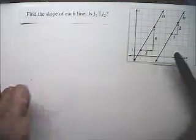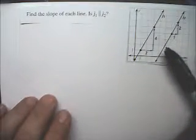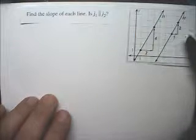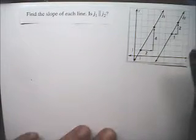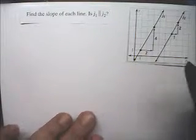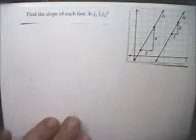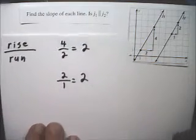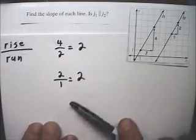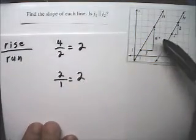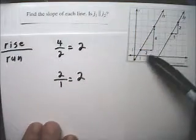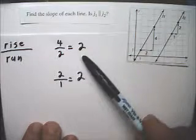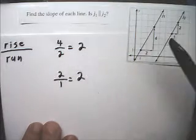The rises and runs are given on the lines, so I'll use that to figure out the slope. Here the rise is 4 and the run is 2, so the slope is 2.